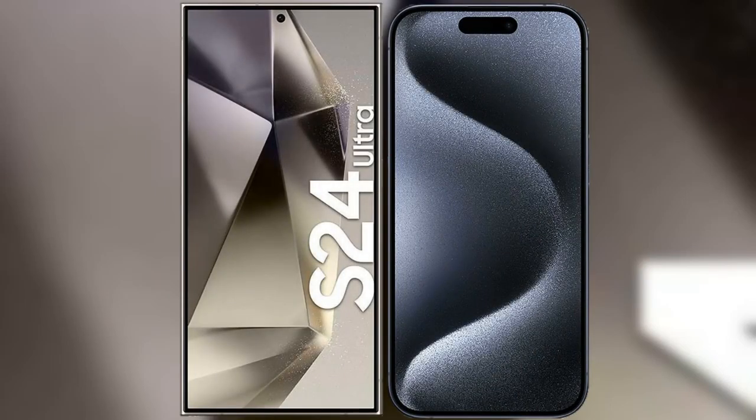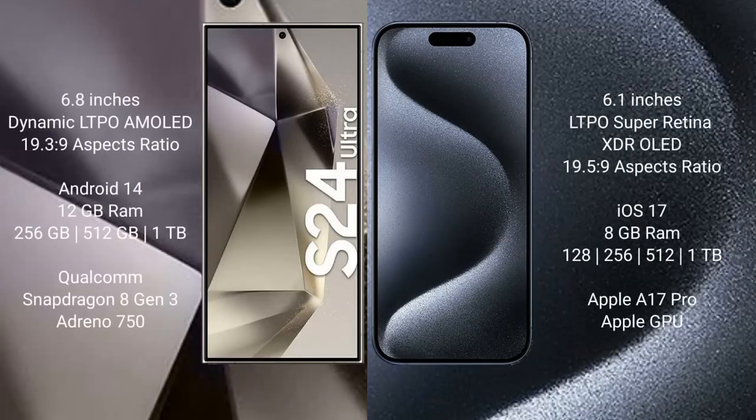I will compare the new Samsung Galaxy S24 Ultra with iPhone 15 Pro. Samsung Galaxy S24 Ultra comes with a 6.8-inch Dynamic LTPO AMOLED display and SuccessPresor 19.3.9. iPhone 15 Pro comes with a 6.1-inch LTPO Super Retina XDR OLED display and SuccessPresor 19.5.9.